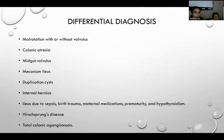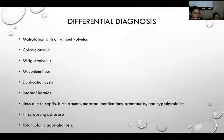The differential diagnosis for ileal atresia includes malrotation, colonic atresia, midgut volvulus, meconium ileus, duplication cyst, and ileus due to sepsis, Hirschsprung disease, or total colonic aganglionosis.